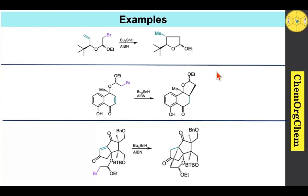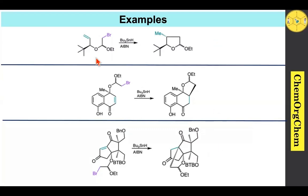We should note all the stereochemistry for the final product. The stereochemistry of the final product is dictated by the stereochemistry present in the allylic alcohol part. Sometimes the stereochemistry of this particular acetal also plays a crucial role through the anomeric effect.